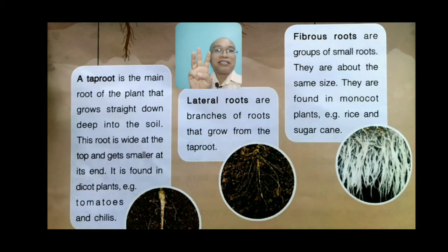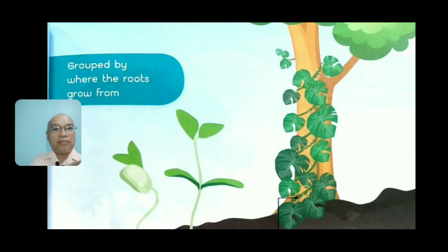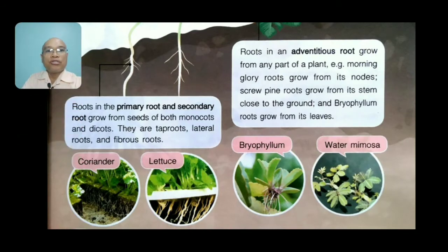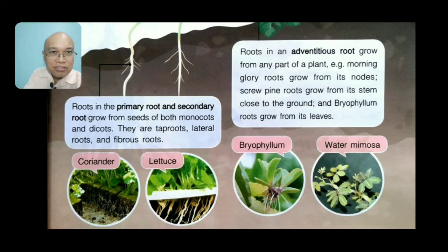So we have three kinds: tap roots, lateral roots, and fibrous roots. You can also group plants by where the roots grow from. Primary and secondary roots grow from seeds in both monocots — mono meaning single — and dicots, meaning two cotyledons. These include tap roots, lateral roots, and fibrous roots, like in coriander and lettuce.